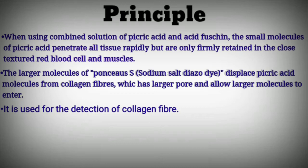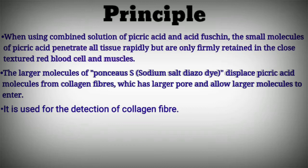It is used for the detection of collagen fiber. When we use the combined solution of picric acid and acid fuchsin, picric acid has the smallest molecular weight — 231 grams per mole — so it penetrates all tissues rapidly. However, in red blood cells and muscles, it strongly binds and is retained. Then we use the larger molecule Ponceau S, which has a molecular weight of 730 grams per mole. It replaces and displaces the picric acid stain in collagen fiber, because collagen has larger pores that allow larger molecules to enter. The purpose of Van Gieson stain is to detect collagen fiber.